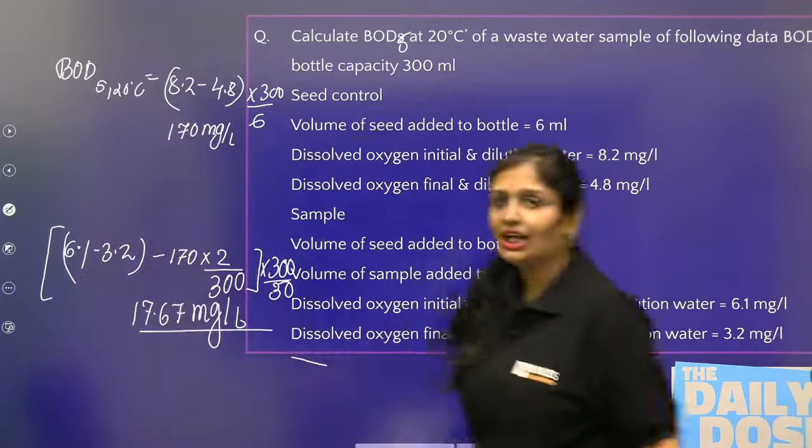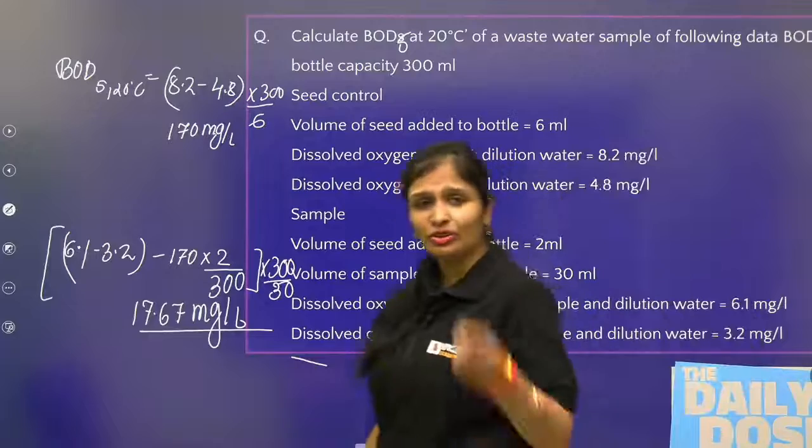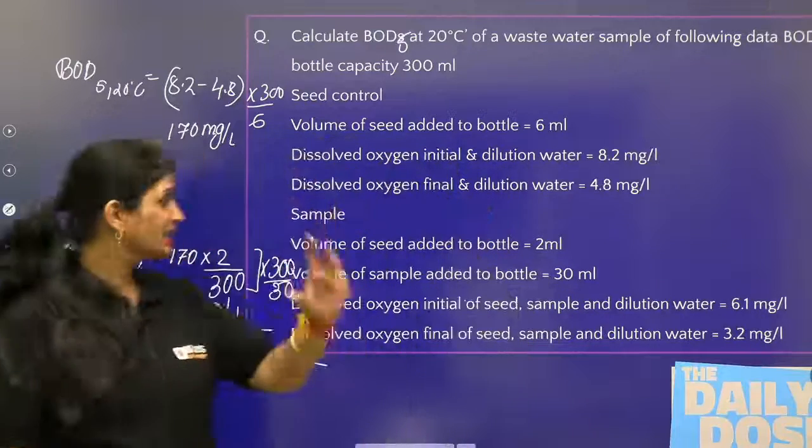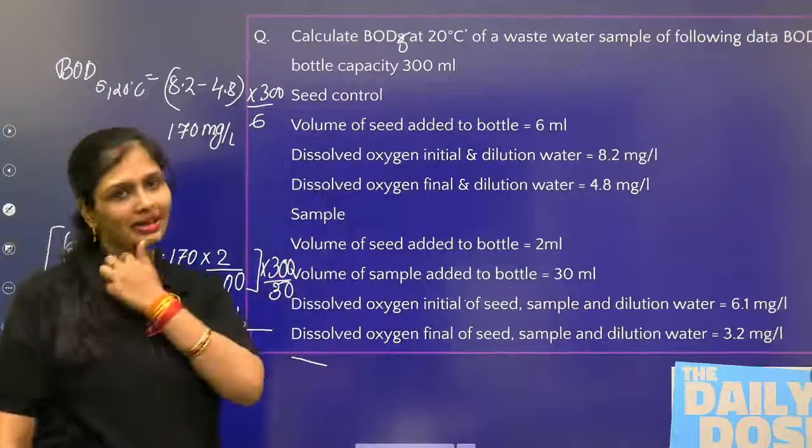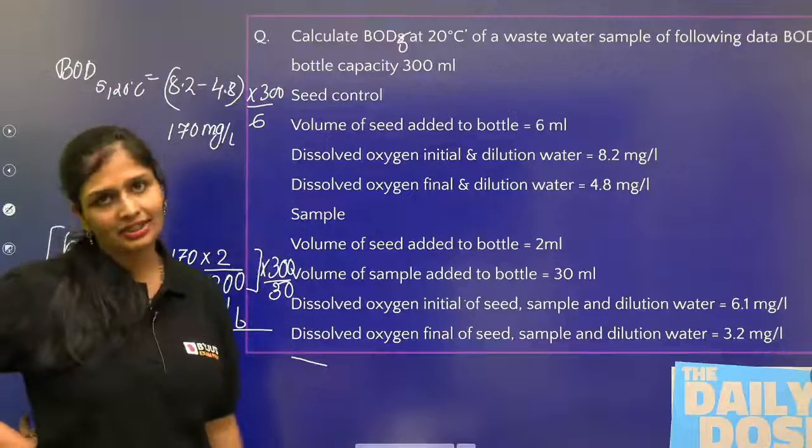So if you solve it, the answer will be (6.1 minus 3.2 minus (170 times 2 divided by 300)) times (300 divided by 30), which equals 17.67 mg per liter. So this was a simple question. It is not always necessary to use dilution, but in GATE the sample is typically diluted, so dilution factor is multiplied here.